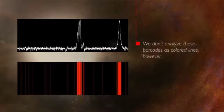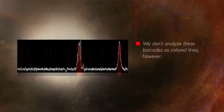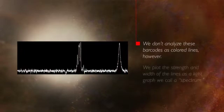We don't analyze these barcodes as colored lines, however. We plot the strength and width of the lines as a light graph we call a spectrum.